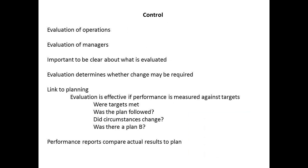Control is achieved by setting targets, measuring performance, and then by comparing or evaluating the performance against the target that was set. Evaluation can be of operations, such as the performance of a production line, or of a robotic system that needs resetting for each different run. Evaluation will also take place for supervisors or managers, and determine how they meet any targets set that involve labour.